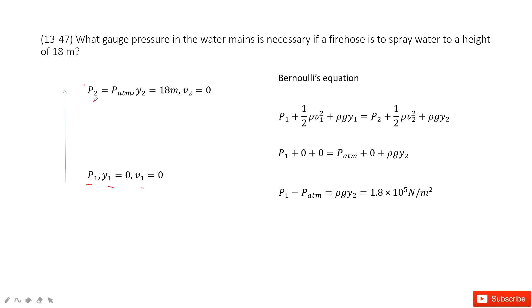At the peak, we consider this is point p2, and p2, the water just move out. So this pressure is just equal to the air pressure, the pressure atm. And then y2, the question told us is 18 meters, v2 is zero.